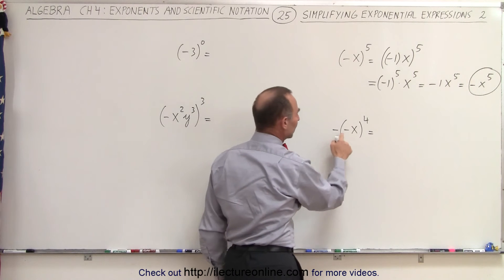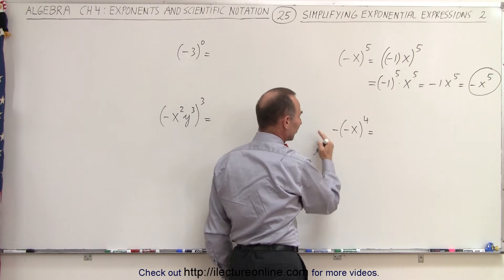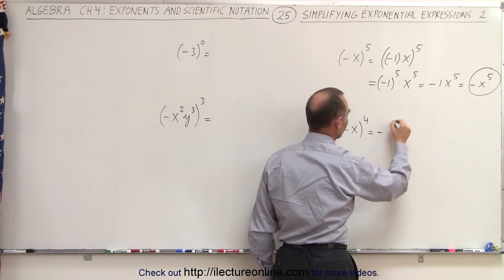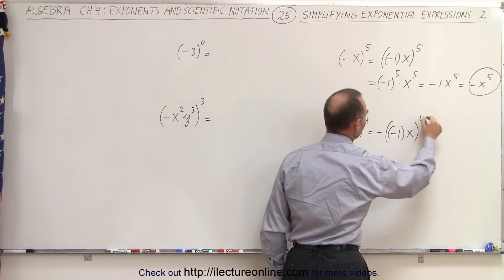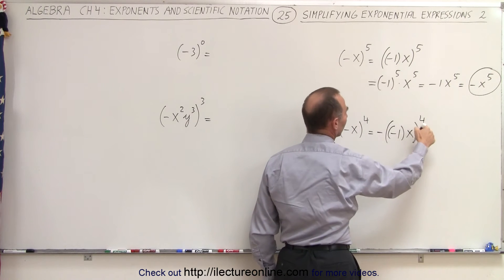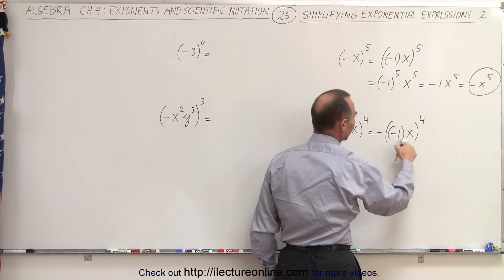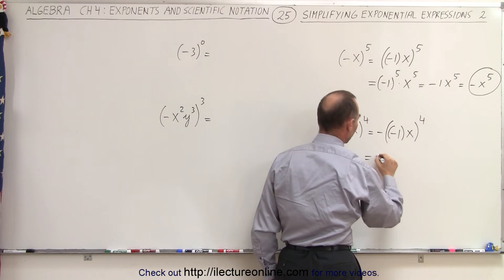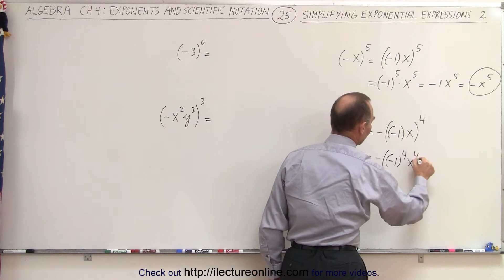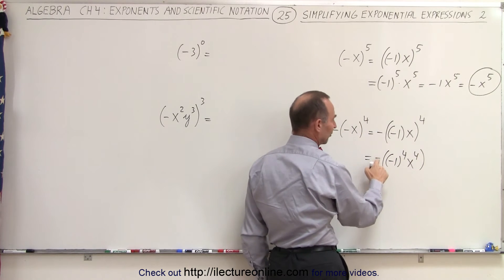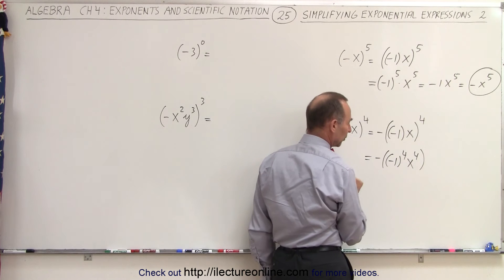The same thing over here, but now we have a negative in front, so we keep that in front. This is equal to minus, minus 1 times x raised to the fourth power. And just like before, the exponent applies to both factors inside the parentheses. So this is equal to minus, minus 1 to the fourth power times x to the fourth power. But we still have the negative in front, which is not affected by the exponent.